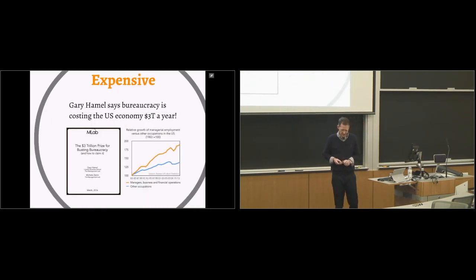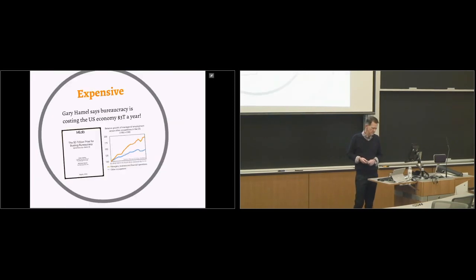For one, it's expensive. Perry Hamill, the Wall Street Journal number one business thought leader, says bureaucracy costs the U.S. economy three trillion dollars a year. And that chart shows how the growth in managerial employment has outstripped other employment. Maybe we need to do something with all of those MBAs we're minting.